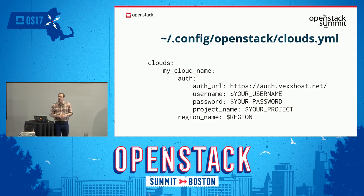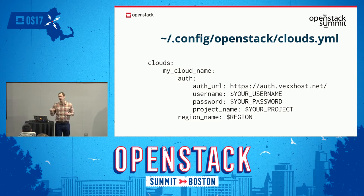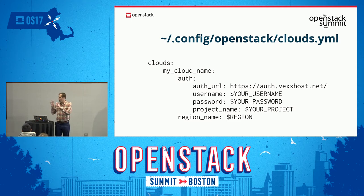One thing that's nice about Shade is if you're using public clouds, it actually knows a lot about them. While you can create this file manually, you can also just specify a cloud by name, provide your username and password, and Shade will automatically know a lot of the settings for how that cloud behaves. Shade tries to abstract the differences between different cloud implementations — some clouds provide public IPs through direct IP attachment, and some through floating IPs. When you define your cloud type, Shade handles all the details through the same API.